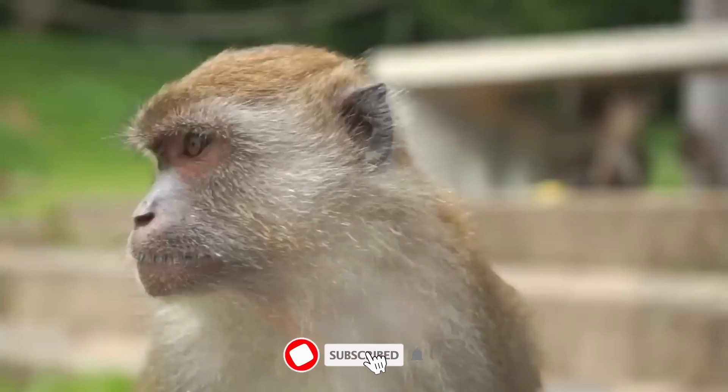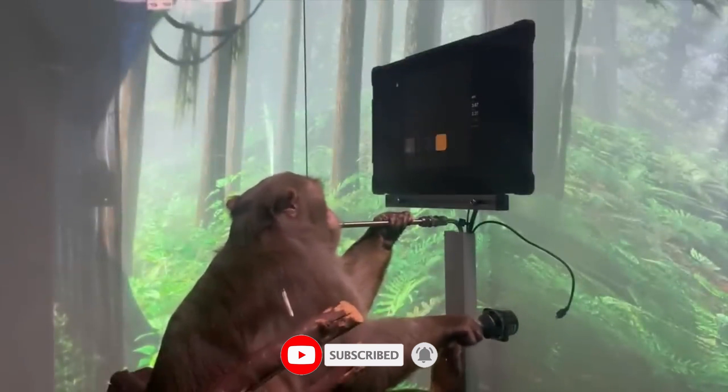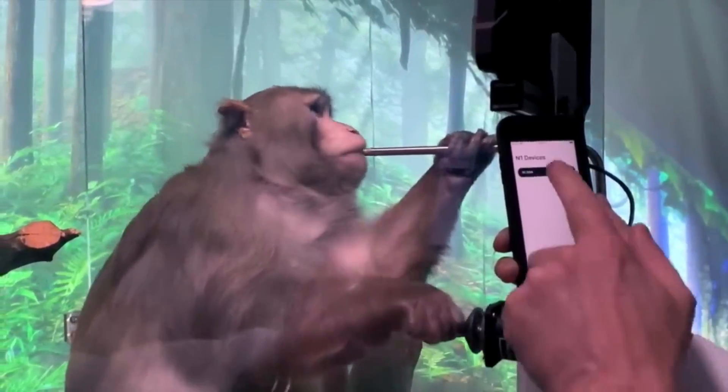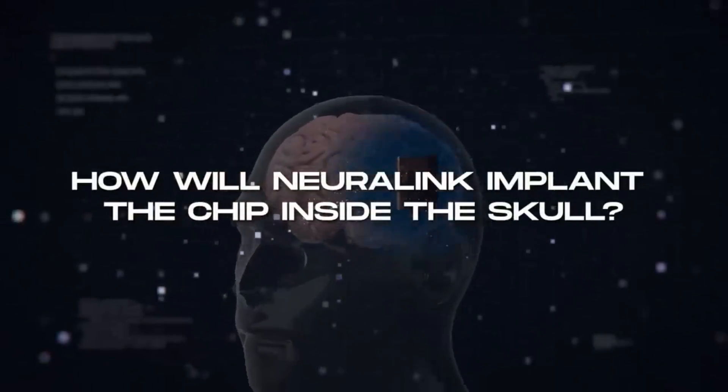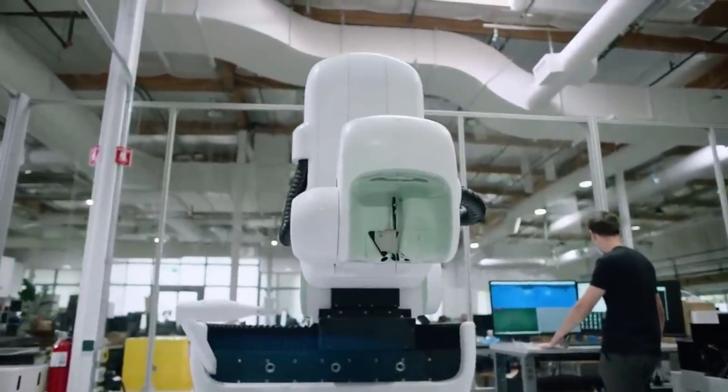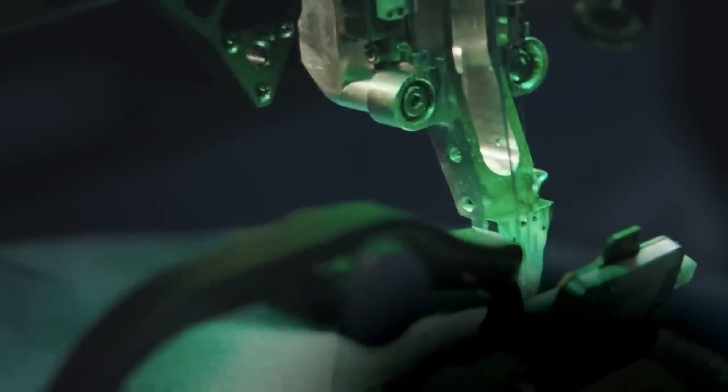However, the company's approval to begin human testing is a significant milestone, indicating that Neuralink is making significant progress in the development of the technology. The chip's functionality will be tested after it has been successfully implanted. This will involve running a series of tests to determine whether the chip can accurately interpret neural signals and translate them into commands that a computer can understand.